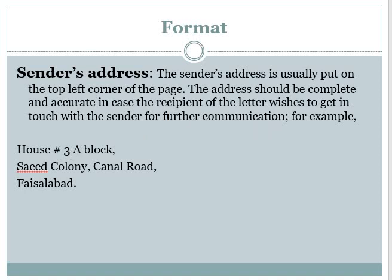After writing the house number and block or street, you insert a comma. Then you write your colony name or road name — for example, Said Colony, comma, Canal Road, comma. On the third line you write the city name, for example Faisalabad, followed by a full stop. The comma after each line and the full stop at the end of the city name are compulsory.